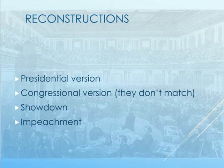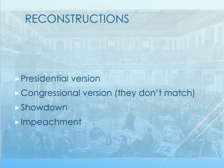They denied seats to representatives from some of the former Confederate states. They overrode Johnson's veto of the Civil Rights Act of 1866 on a second attempt. And then, because their citizenship provisions didn't go through the way they thought, they wrote the 14th Amendment to the Constitution, which guarantees citizenship to anybody born in the United States.